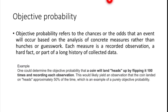For example: one could determine the objective probability that a coin will land heads up by flipping it 100 times and recording each observation. This would likely yield the observation that the coin landed heads approximately 50% of the time. He is not guessing — he is recording each observation and based on that data, stating that 50% of the time it can come up heads. That is purely objective probability.